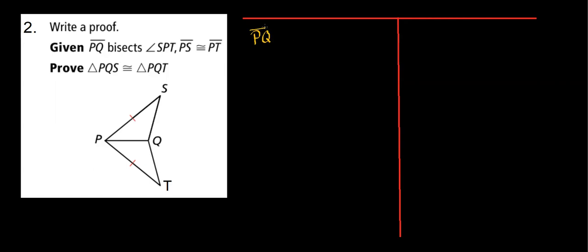We know that line segment PQ bisects angle SPT, and that has been given to us. And we also know that segment PS is congruent to segment PT. And that's been given to us. And notice they've already marked PS and PT for us.